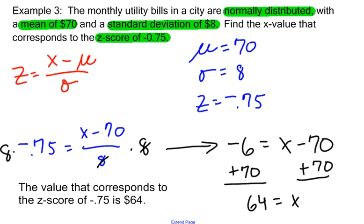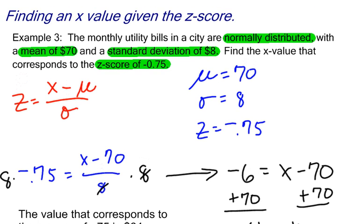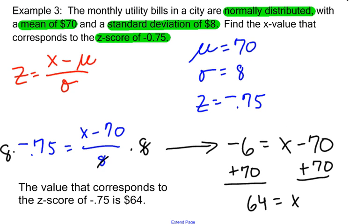There we go. That's it. That's how you can find the value of x if you are given a z-score. It's basically just algebra.